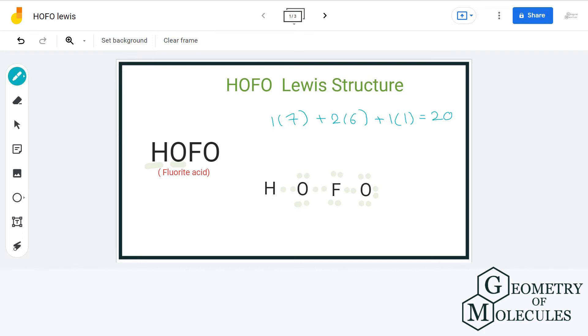Let us calculate the formal charge to confirm this is the final and best possible Lewis structure of fluorous acid. For oxygen, we have six valence electrons minus four non-bonding electrons minus four bonding electrons divided by two, giving us a formal charge of zero.